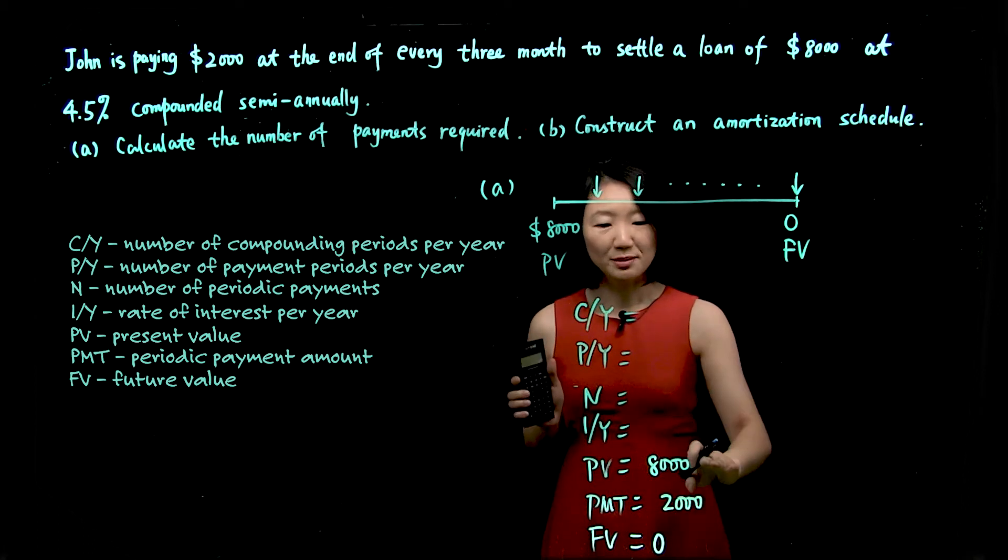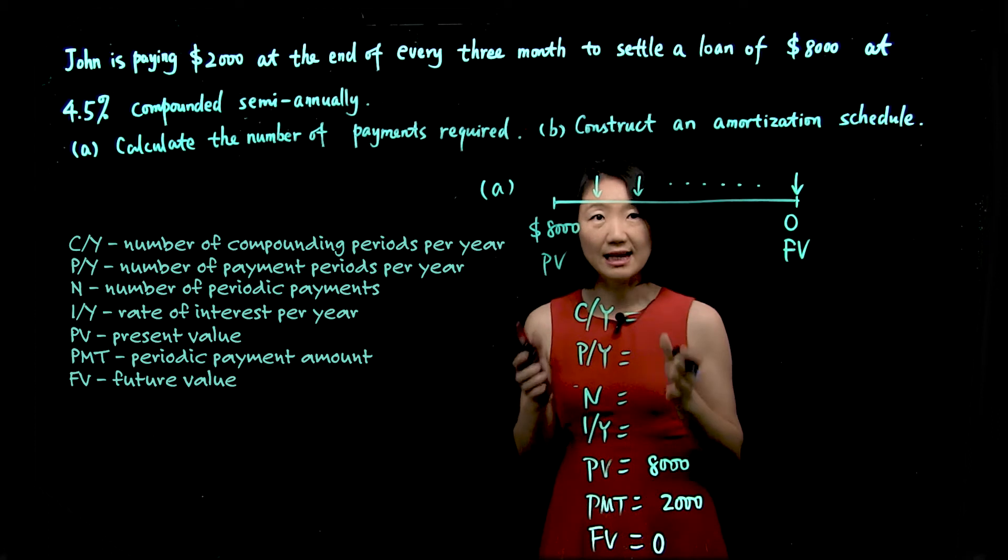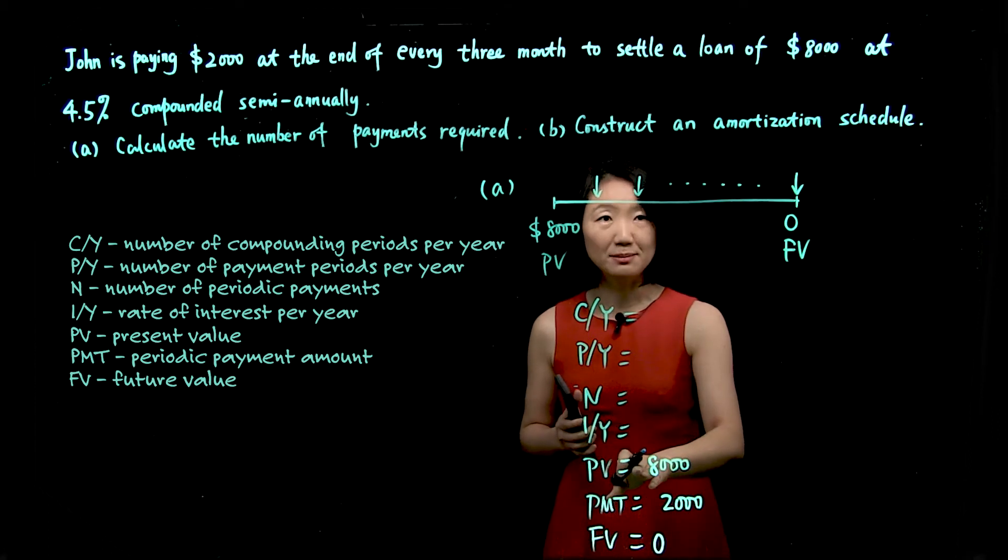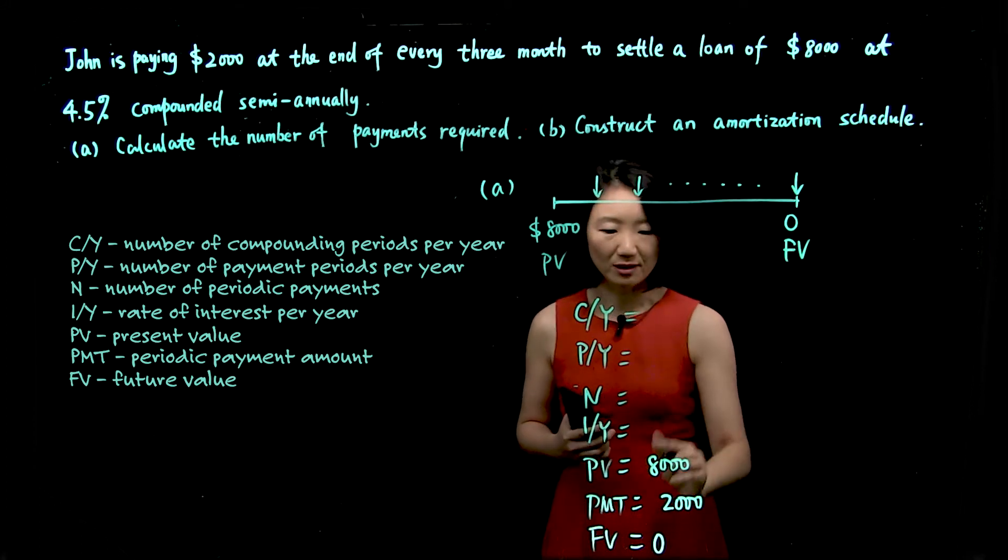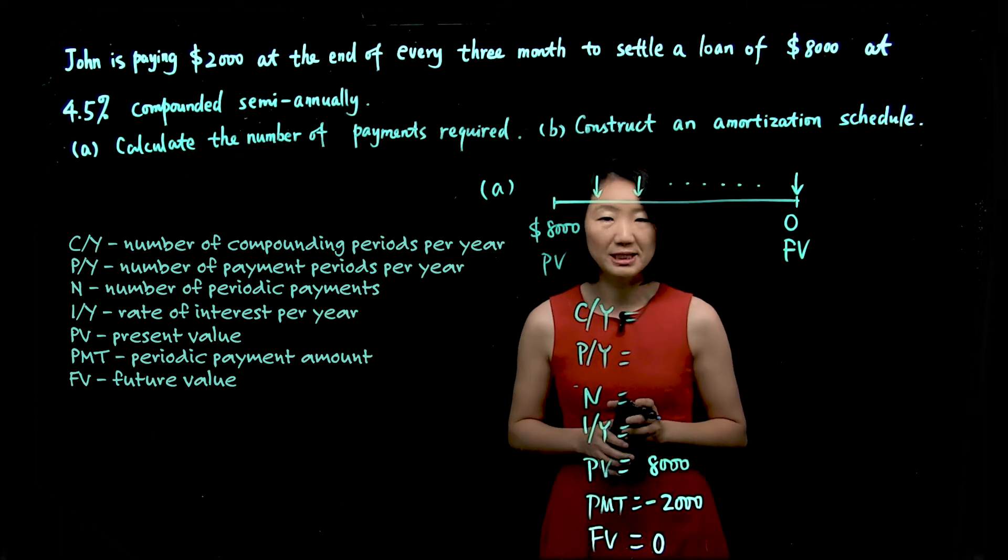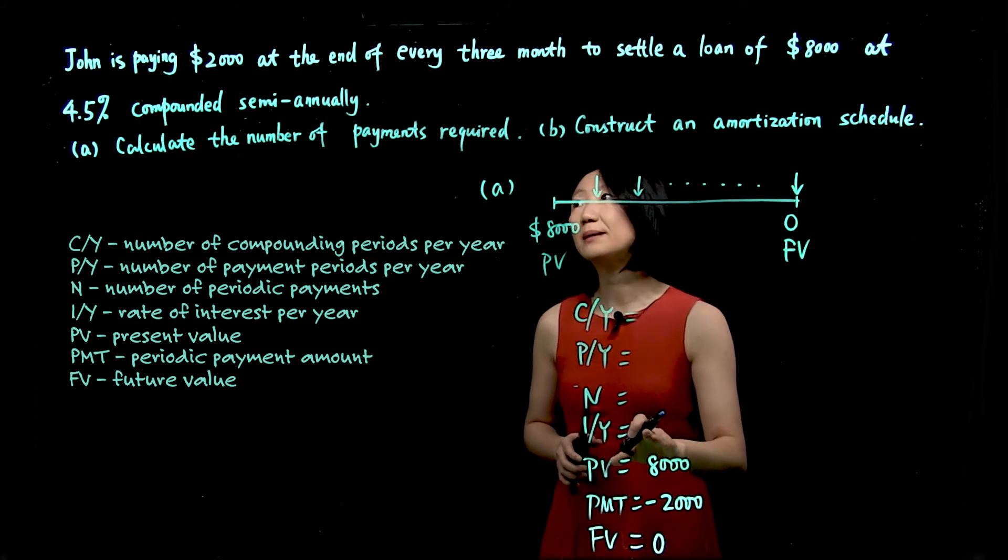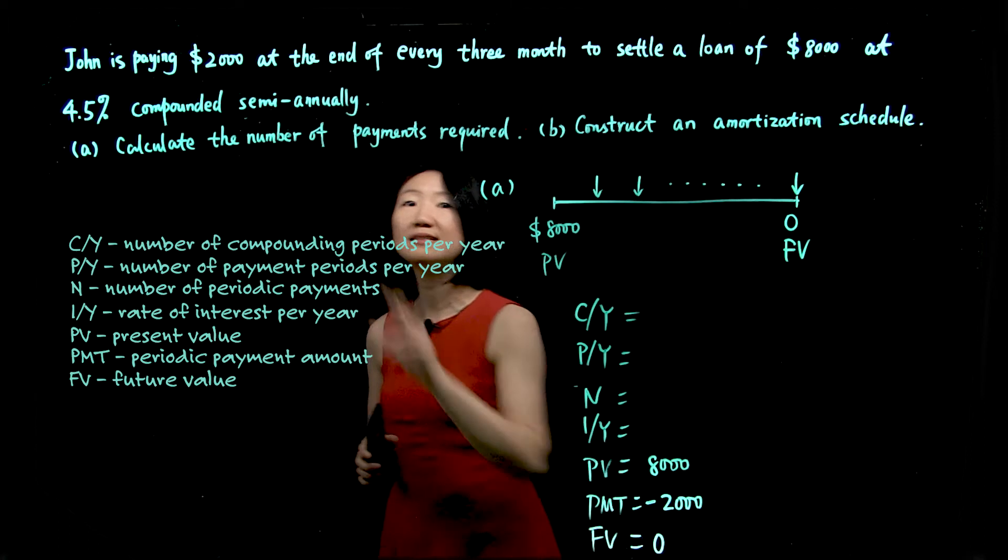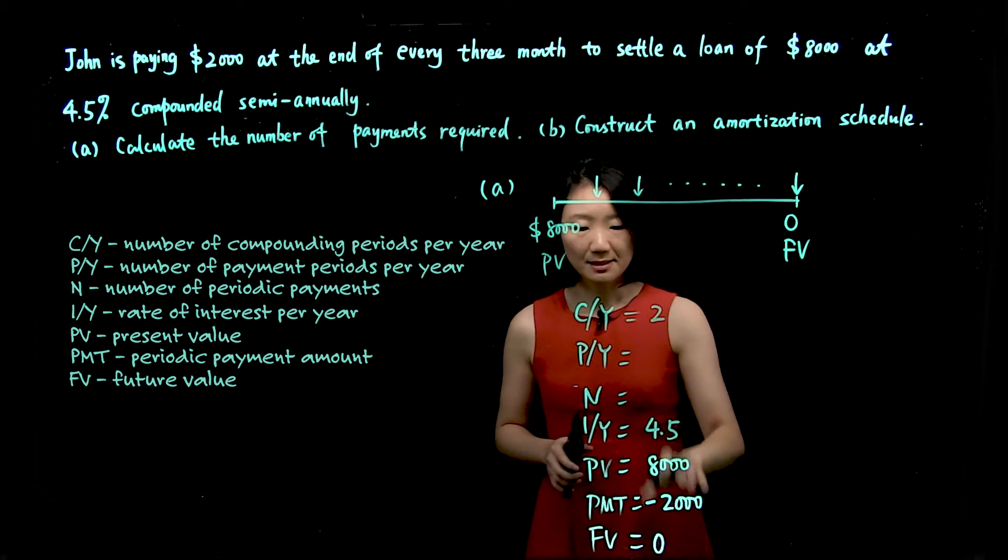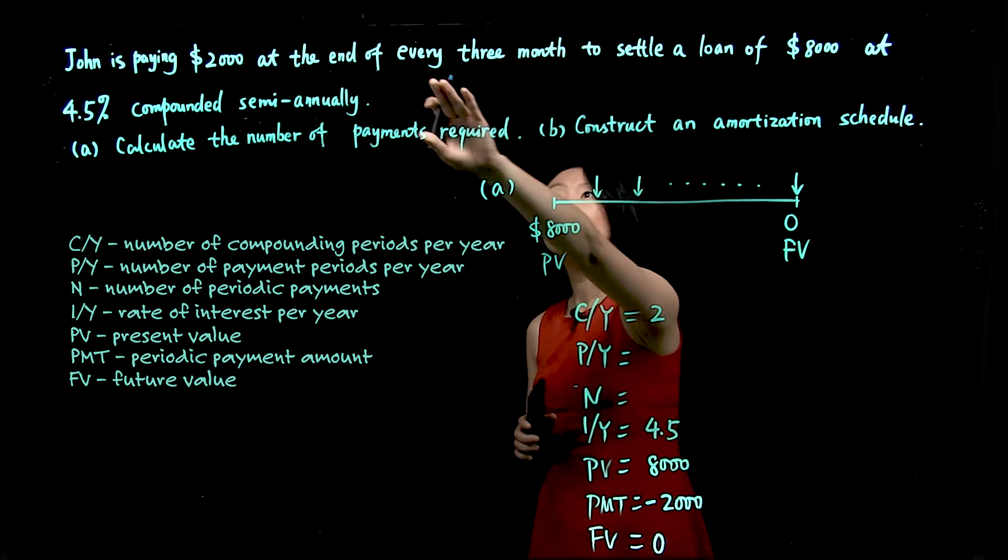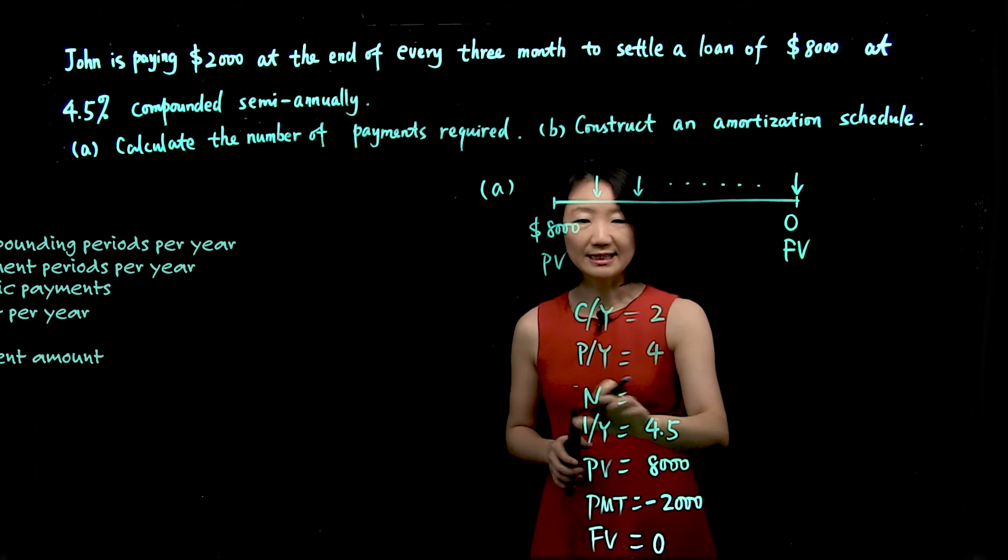Now when we use the calculator, we're going to be careful with the sign. So he received $8,000 loan today. That, for John, is cash inflow. We keep that as positive. But when he makes periodic payment, that's a cash outflow, so we'll put a negative sign there for PMT. And at the end, future value is zero. So the interest for him is 4.5% compounded semi-annually, so 4.5 compounding semi-annually, twice a year. Periodic payment happens every three months, so there are four times each year. And N is unknown.